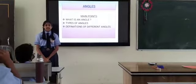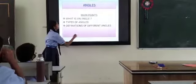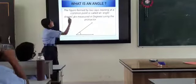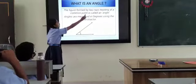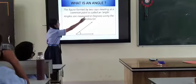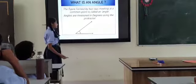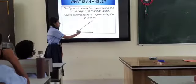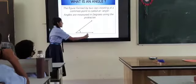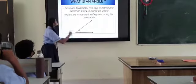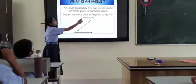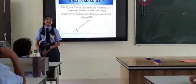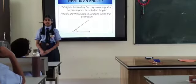So first let's see what is an angle. The figure formed by two rays meeting at one common point is called an angle. As you can see here is an angle — it has two rays and it is meeting at one point. The angles are measured in degrees using the protractor, like 90 degrees, 180 degrees, 60 degrees.